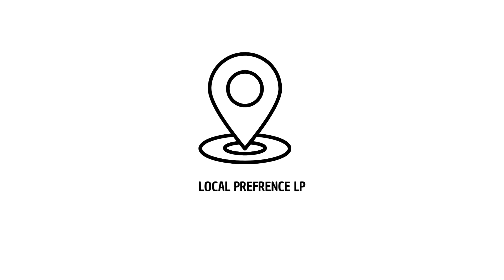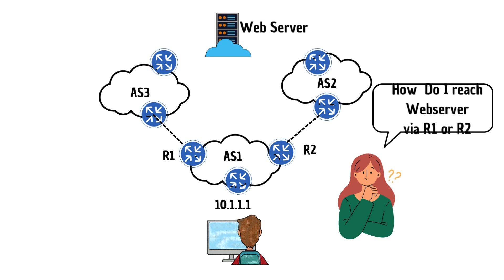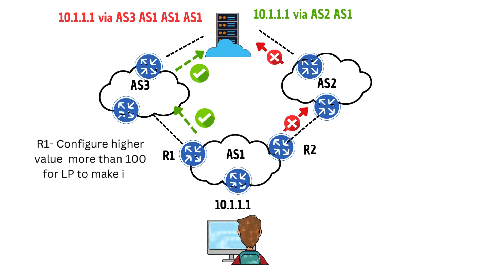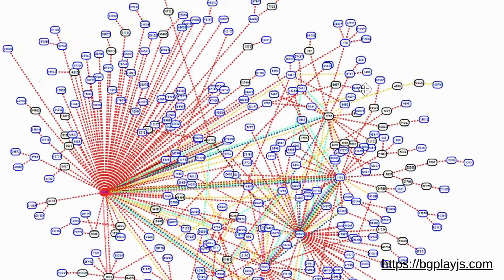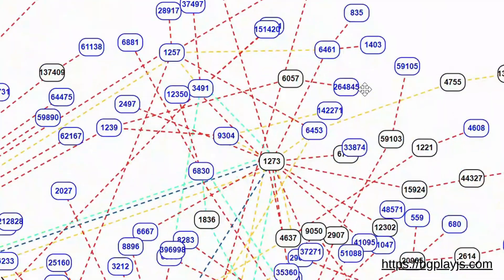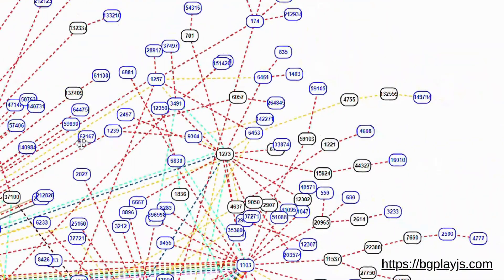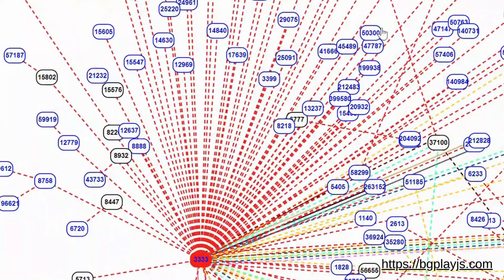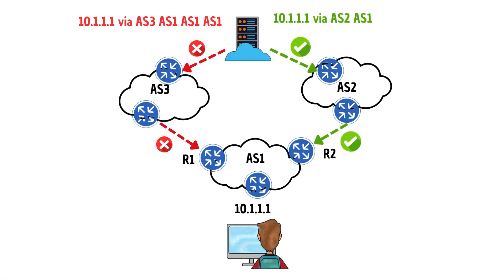Local preference influences outbound traffic from your network. By configuring a higher value of local preference on a router, you effectively designate it as the preferred exit point for your traffic towards the internet. The default value is 100, but any value greater than 100 makes the router the primary path for outgoing traffic. Through BGP attributes like AS path and local preference, network operators exercise complete control over inbound and outbound traffic, ensuring reliable, fast connectivity across the internet.